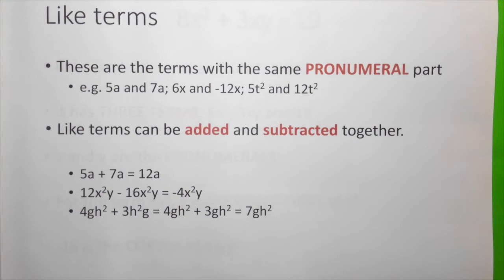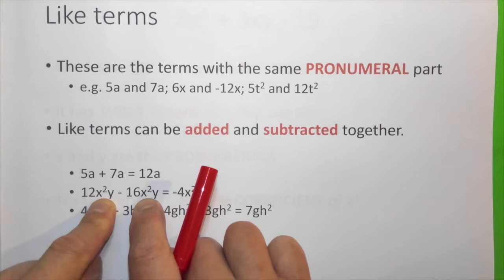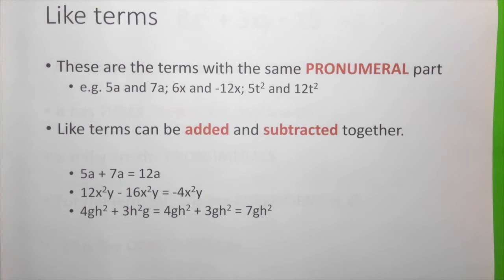Like terms can be added or subtracted together. For example, 5a plus 7a added together is 12a. 12x squared y minus 16x squared y: x squared y in this term is the same as x squared y in this term. Therefore, they have the same pronumeral parts and we can subtract them which gives us minus 4x squared y.